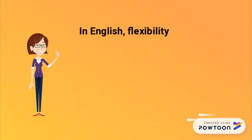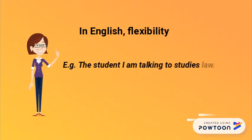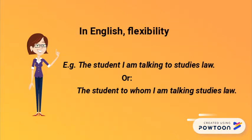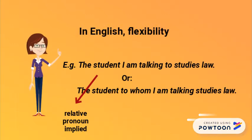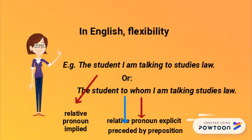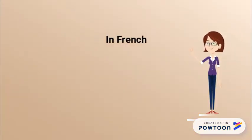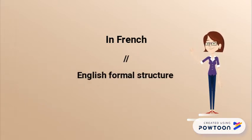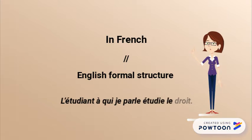In English, there is some flexibility in the construction of relative clauses. For instance, you can say 'the student I am talking to studies law,' or more formally, 'the student to whom I am talking studies law.' In the first sentence, the relative pronoun is implied. In the latter, the pronoun is explicit and is preceded by the preposition 'to.' In French, the structure corresponds to the English formal structure: 'L'étudiant à qui je parle étudie le droit.'